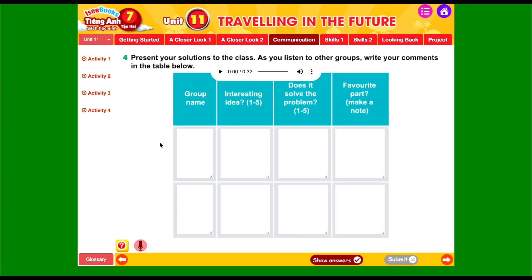Hoạt động số 4: chúng ta sẽ trình bày một số giải pháp trước lớp, và nghe audio để điền vào những thông tin được đề cập. 'We will design a Skycar. It will use gas to run, speeding up to 200 km an hour. It will look like a small plane and will be equipped with modern technology. It lets us know how safely we are driving on the roads. People can use this car on the street. Even when the street is gridlocked, this car can fly in the air. Especially, it can carry more than 10 people.'